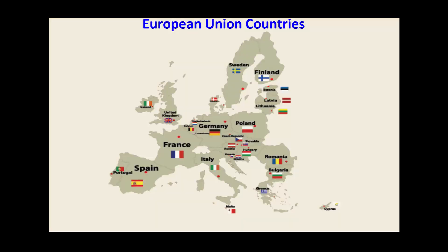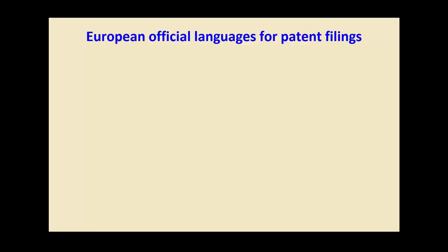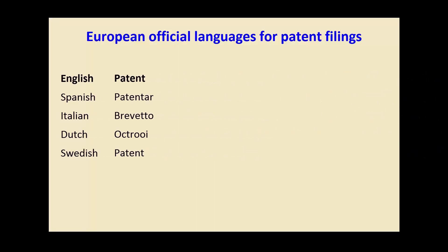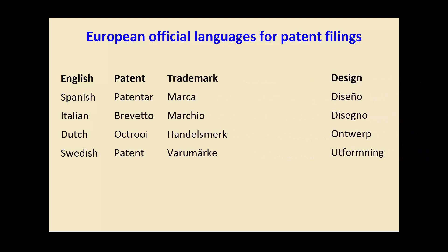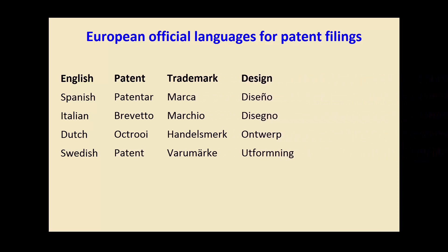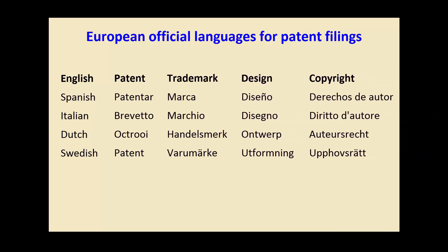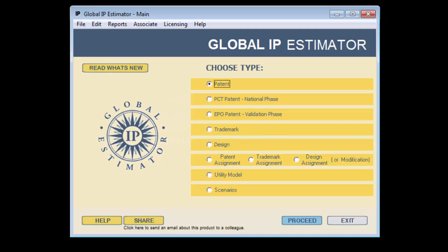As an IP professional, it is difficult to provide an accurate estimate of the translation costs of the claims or the entire specification. This can be done with ease by our software, the Global IP Estimator.